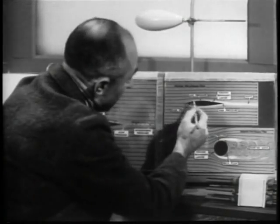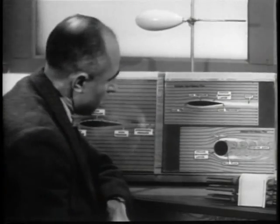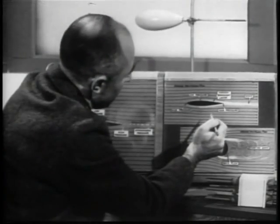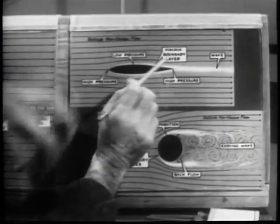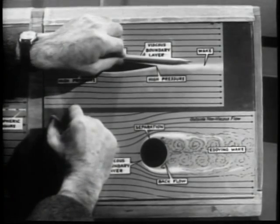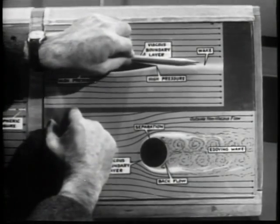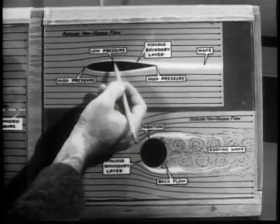A fluid particle in the boundary layer can behave in a similar way as it first goes down a pressure hill and then up a pressure hill. But fortunately, the analogy of the marble in the bowl is not complete. If it were, there would always be some backflow in the boundary layer with consequent separation of the main flow. The faster moving outside fluid exerts a viscous force on the boundary layer which actually assists the boundary layer to continue in the downstream direction. It is then a question of whether this assisting force is sufficiently large to counterbalance the combined opposing forces due to friction at the wall and to the increase of pressure.